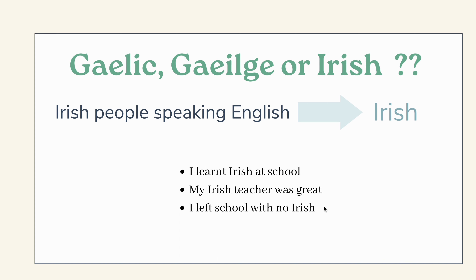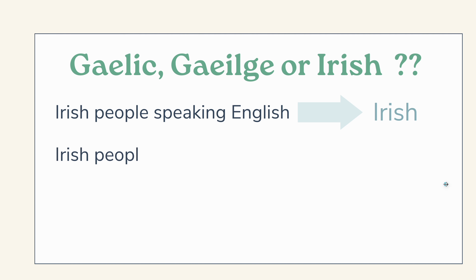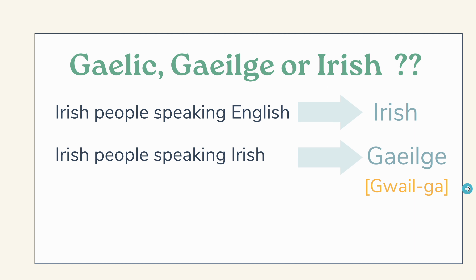So when Irish people are speaking in English, we just refer to the language as 'Irish' or 'the Irish language.' However, when Irish people are speaking Irish, or they want to say the Irish language in Irish, we say 'Gaeilge.' Gaeilge.